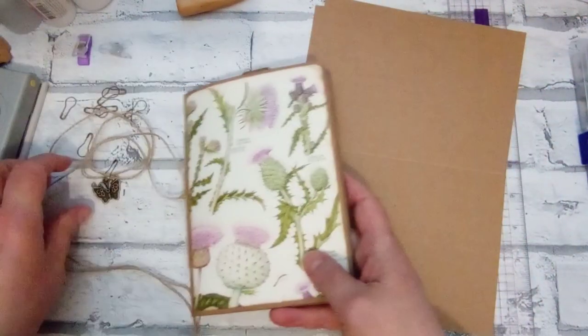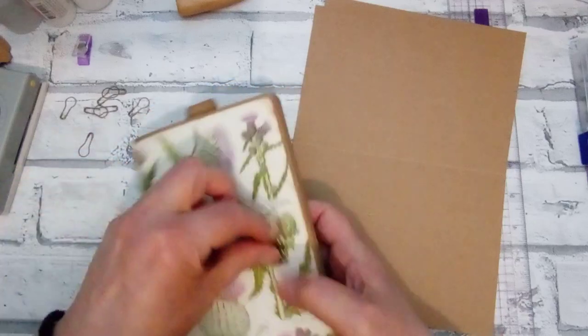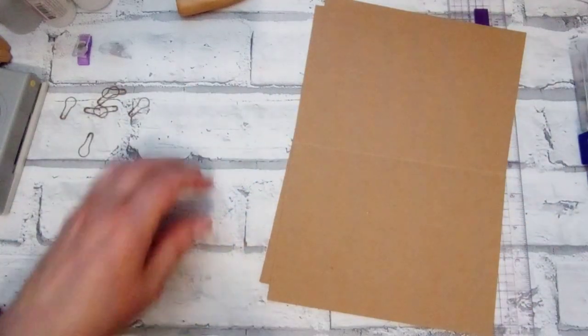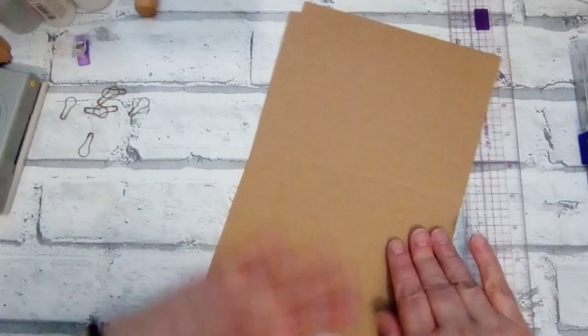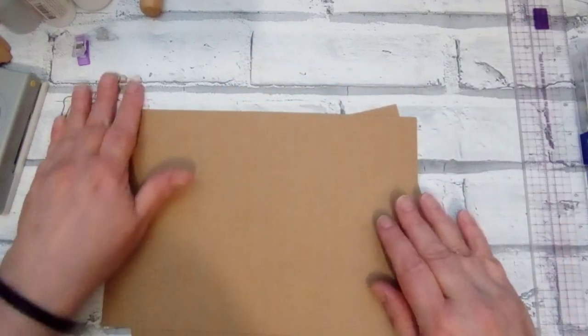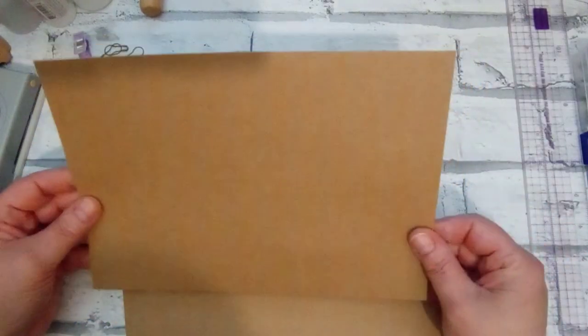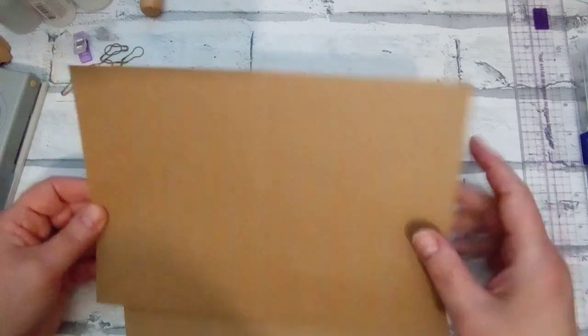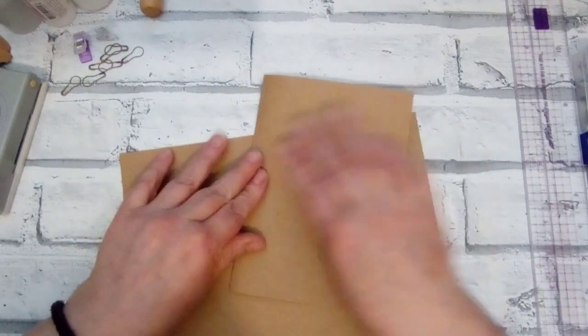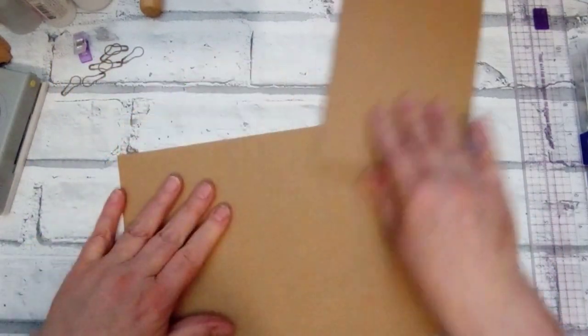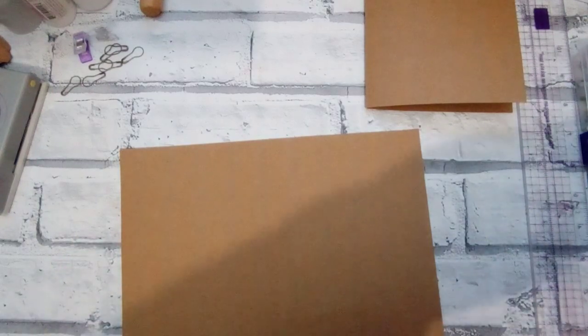I quite often buy greeting card blanks and envelopes for my crafts rather than buying card. It just seems to work out cheaper than buying sheets of card. These are five inch by seven. I'm going to start by folding one in half and cutting the other one up. That's your cover. How easy could that be?